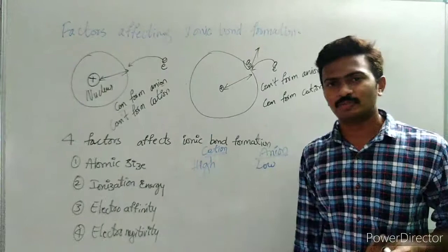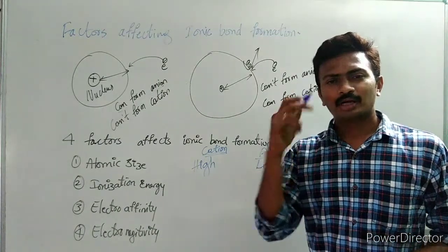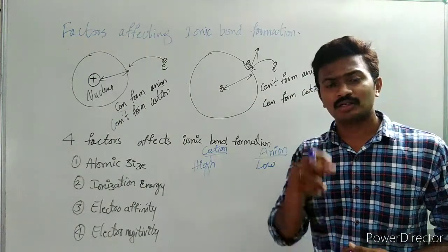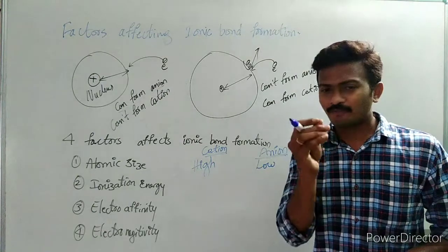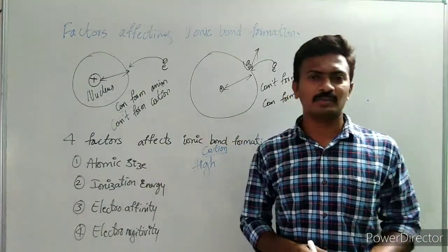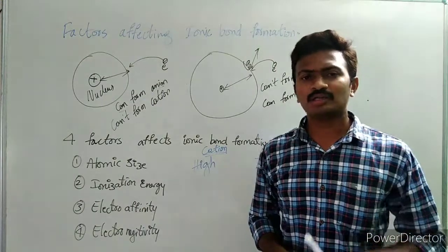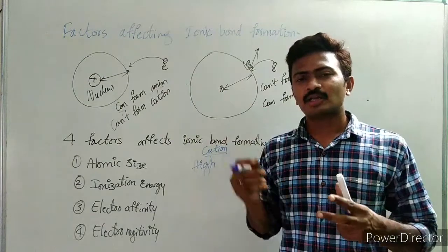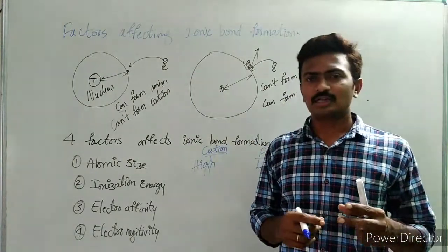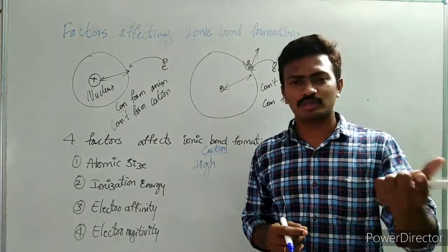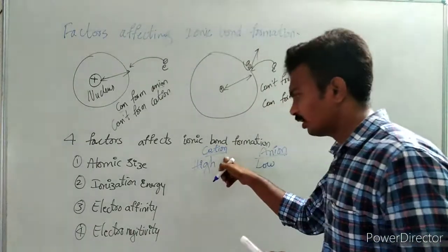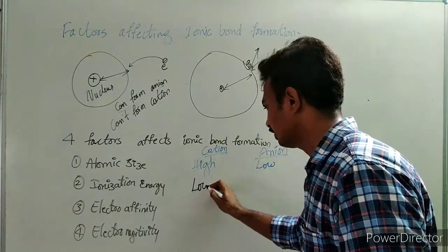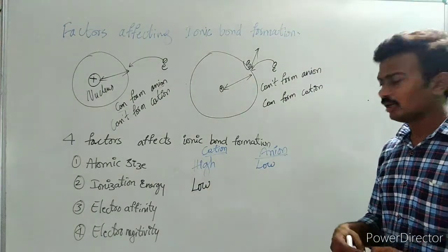Next, ionization energy — the amount of energy required to remove an electron. In order to form a cation, ionization energy should be less. If by providing less amount of energy we can remove the electron, it will favor cation formation. If the ionization energy is very high, that means that atom needs more energy to lose the electron, so it is not ready to lose the electron. Therefore, ionization energy should be low to form a cation.